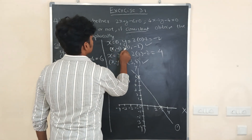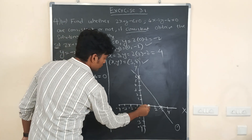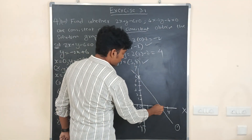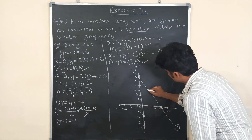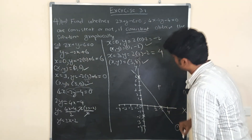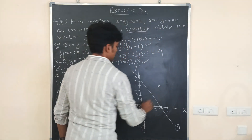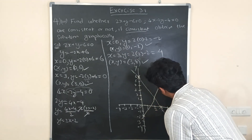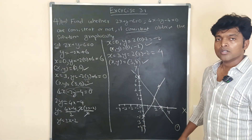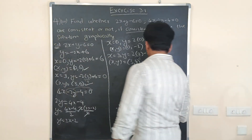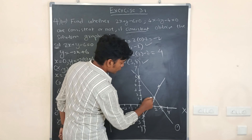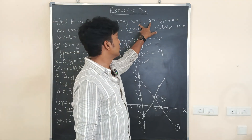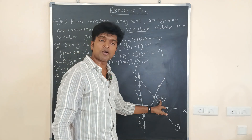Next, for equation 2, plot x = 0, y = -2 — that point is here below the origin. Then x = 3, y = 4 — that point is somewhere here. Join these two points. The two lines intersect, and this is the point of intersection. That point is (2, 2). The solution of these two lines, where they are intersecting, is the point of intersection: 2 comma 2.